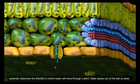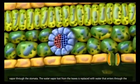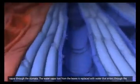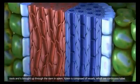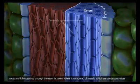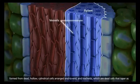Water passes out of the leaf as water vapor through the stomata. The water vapor lost from the leaves is replaced with water that enters through the roots and is brought up through the stem in xylem. Xylem is composed of vessels, which are continuous tubes formed from dead, hollow,